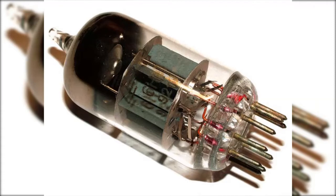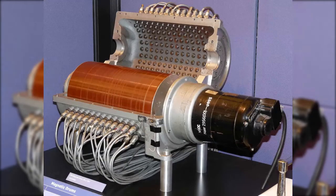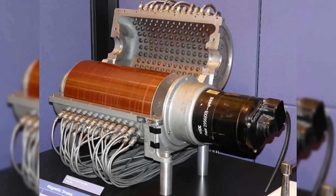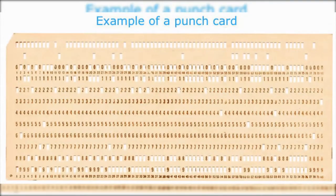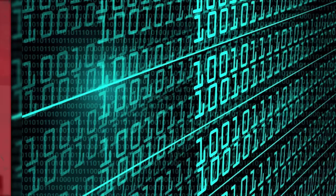Characteristics of first generation computers: they used vacuum tubes for circuitry; electron-emitting metal in vacuum tubes burned out easily; used magnetic drums for memory; were huge, slow, expensive, and often unreliable; were expensive to operate; were power-hungry; generated a lot of heat which caused malfunctions; solved one problem at a time; used punch cards for input with outputs displayed in printouts; used magnetic tapes and machine language; had limited primary memory; and could only be programmed in machine language.